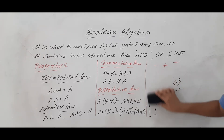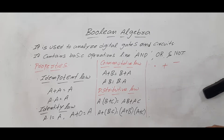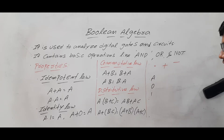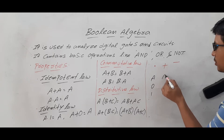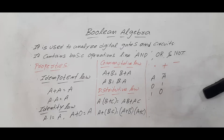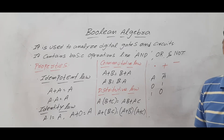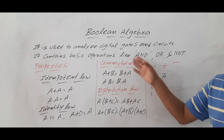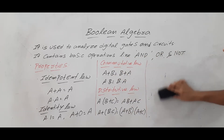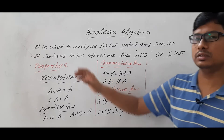Coming to NOT: if input A is 0 then NOT A produces 1, and if A is 1 then NOT A produces 0. It produces the complement of the input. I hope you have understood the basic operations: AND, OR, and NOT. Now we will discuss the properties of Boolean algebra.